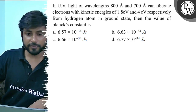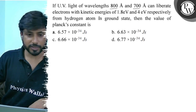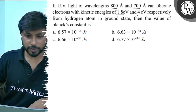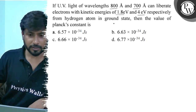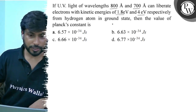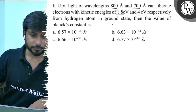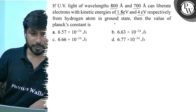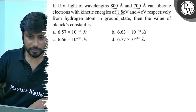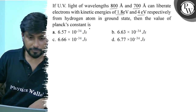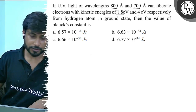UV light of wavelength 800 angstrom and 700 angstrom can liberate electrons with kinetic energy 1.8 and 4 electron volt from hydrogen atom in ground state. So we have to find the value of Planck's constant.